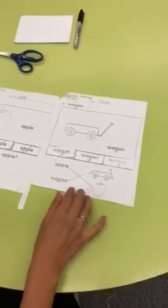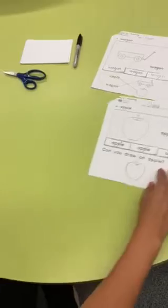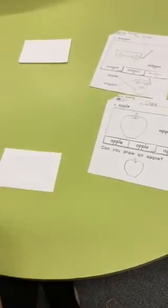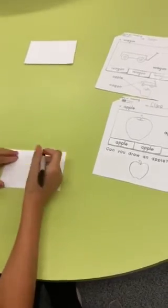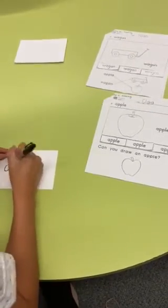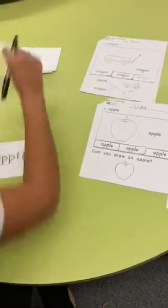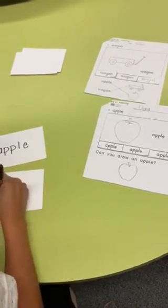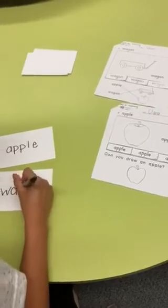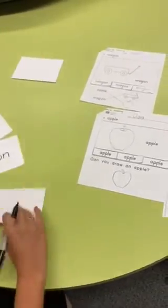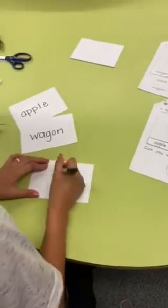The next thing is we would like for you to make sight word cards for your children. The sight words for this week are 'apple,' 'wagon,' and 'I.' We would like for you to keep these in a stack.